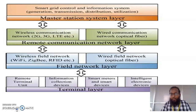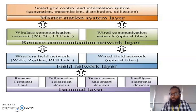Each layer is connected through the bus bar. Each layer consists of two types of communication systems: one is wireless communication and the second is wired communication. In wireless communication networks we use 2G, 3G, and LTE technologies. In wired communication, we most probably use optical fiber communication only. In the terminal layer, we use four types of devices: the first is remote terminal device, second is information collection device, third is smart meters and smart devices, and fourth is intelligent electronic devices.